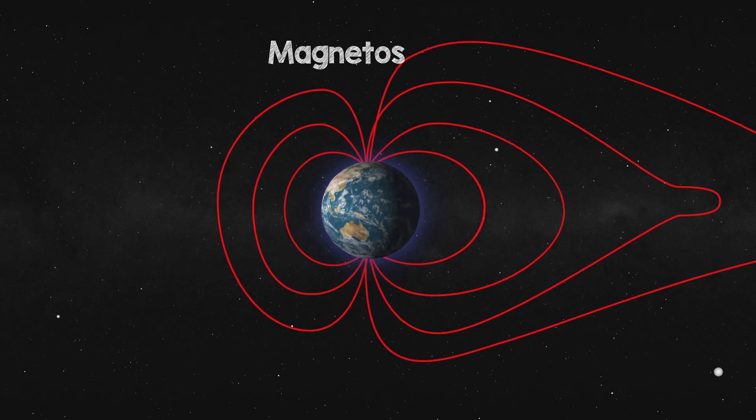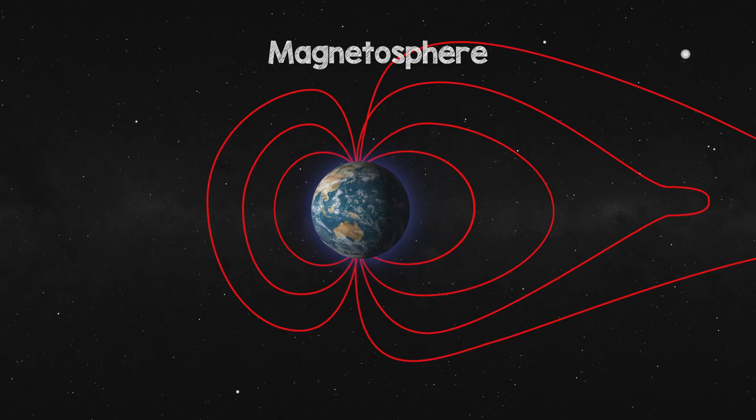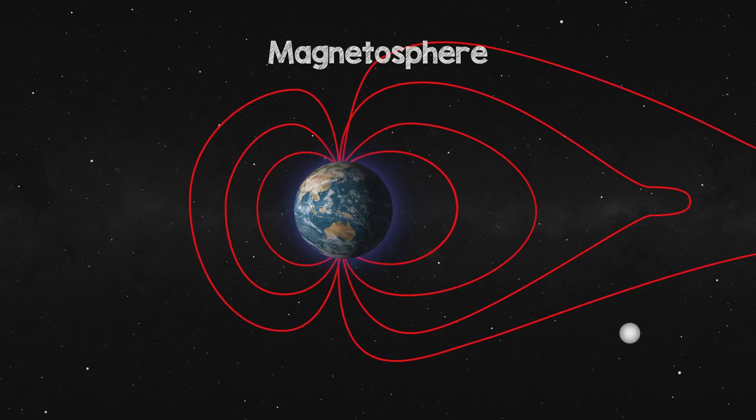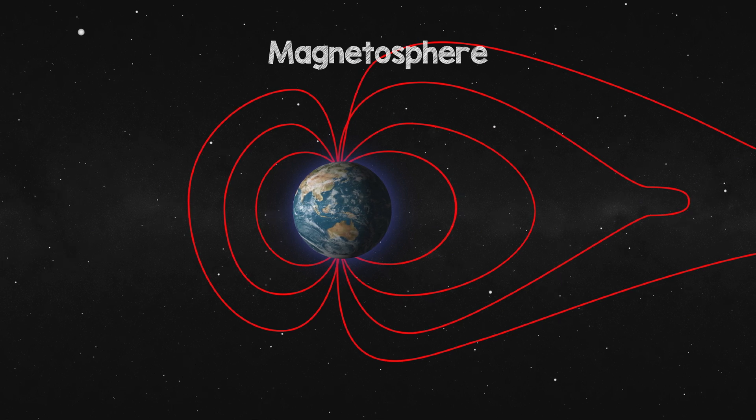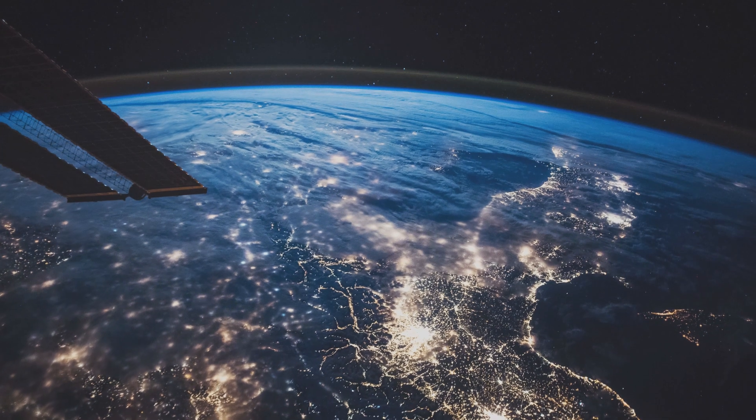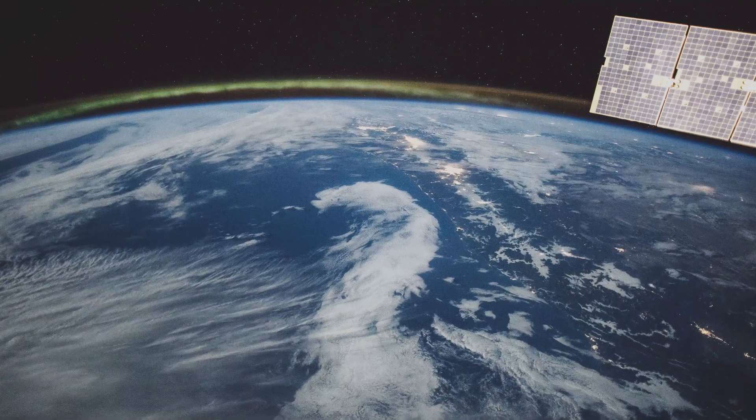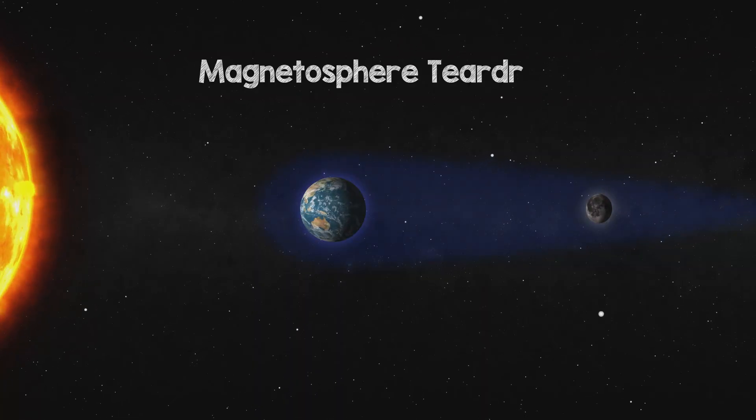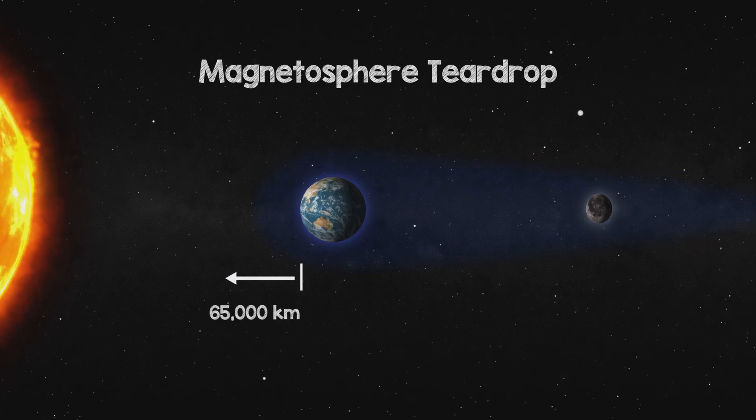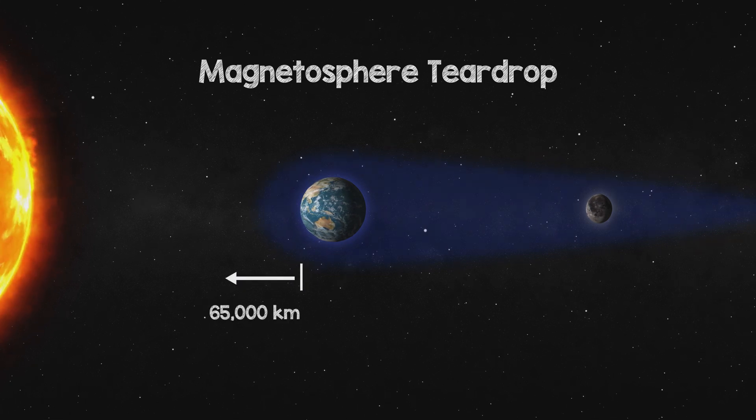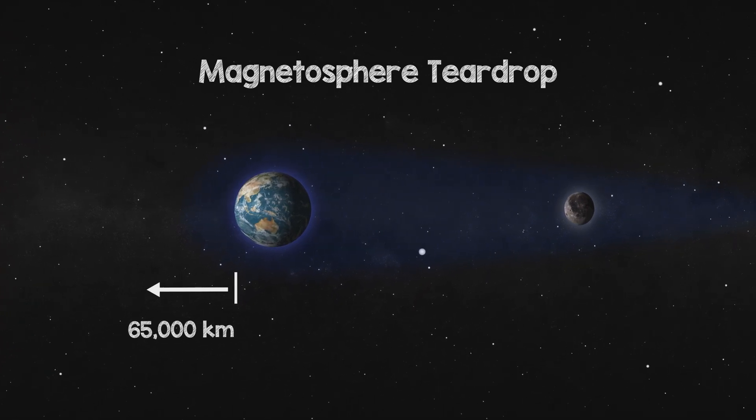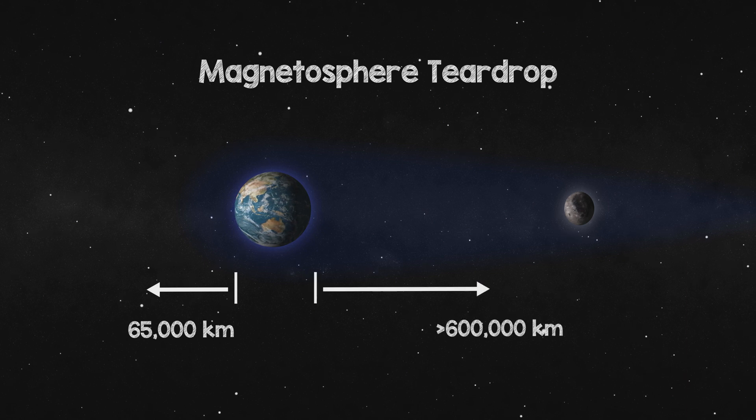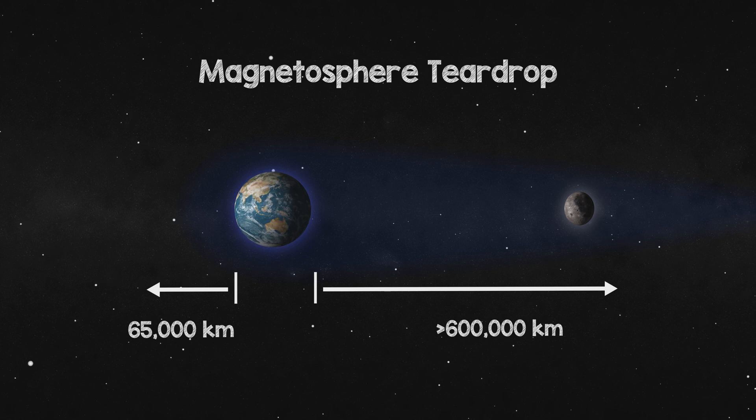The Earth is blanketed by a protective region of space called the magnetosphere, which is dominated by a powerful magnetic field. It's our planet's shield in space. The measurements from many space missions have been combined to reveal the Earth's magnetosphere is blown out by the solar wind into a teardrop shape. The head of the teardrop extends only about 65,000 kilometres towards the sun. The tail of the drop stretches away in the direction opposite the sun, actually reaching beyond the moon's orbit. This long magnetotail extends more than 600,000 kilometres from Earth.